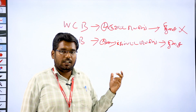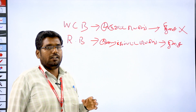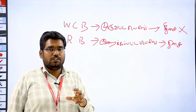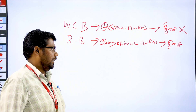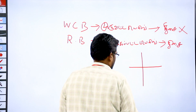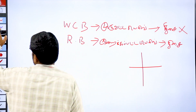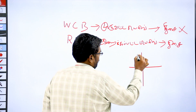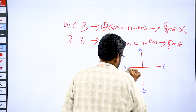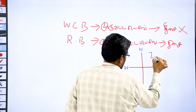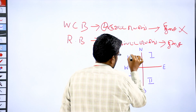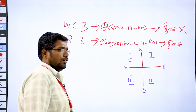When we talk about WCB, we have a tabulation. Let's draw a graph with directions: North, South, East, West. This gives us four quarters — first quarter, second quarter, third quarter, fourth quarter. We can mark the angles: 0 degrees, 90 degrees, 180 degrees, 270 degrees. Each quarter spans 90 degrees.